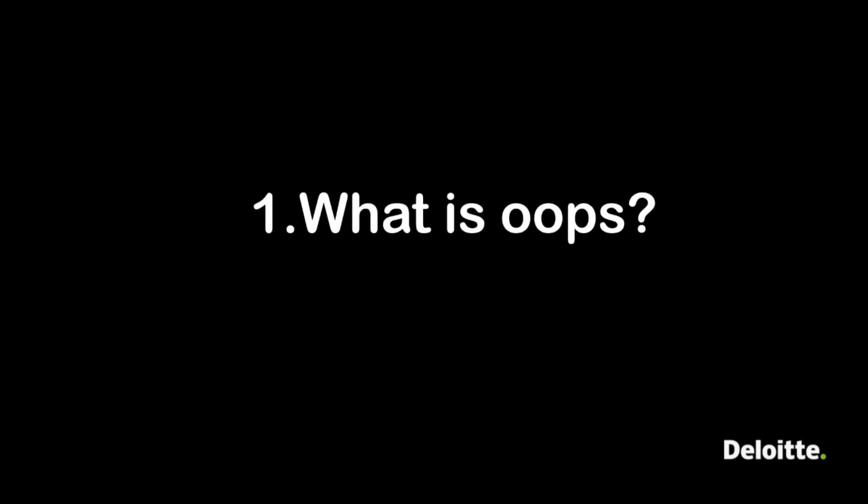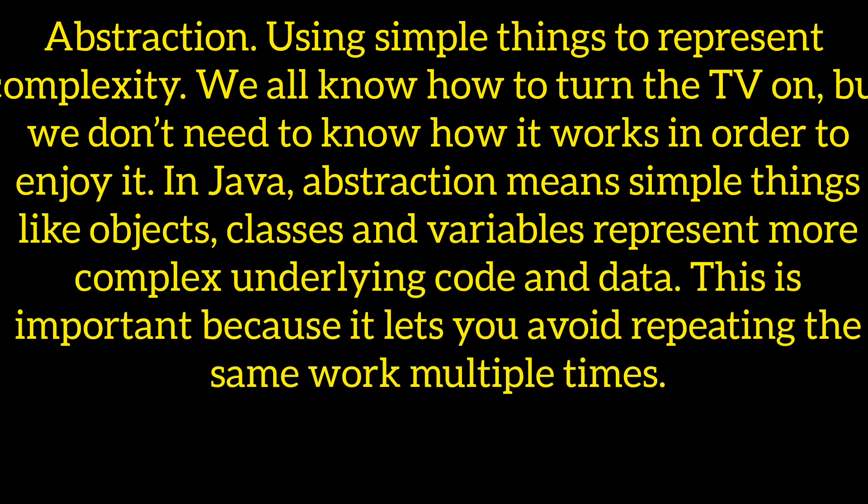The first question is: what is OOPs? We can talk about the four pillars of OOPs — abstraction, encapsulation, inheritance, and polymorphism. Abstraction means using simple things to represent complexity. For example, we know how to turn on a TV but don't need to know how it works to enjoy it. We hide the complexity and expose simple things to the outer world — that is abstraction.